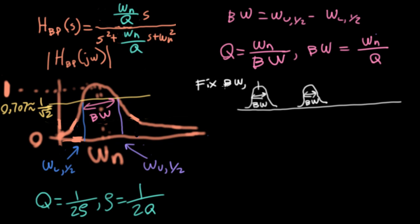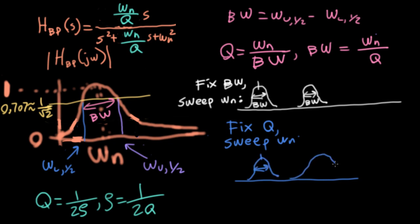Because if you imagine that you fix the bandwidth and you sweep omega N upward, what you'll find is that the listener will perceive this filter as having a smaller quote unquote bandwidth, even though the bandwidth is technically the same. So this is the case if you fix the bandwidth, but you sweep omega N. Now, if you instead fix Q, but sweep omega N, then what happens is you'll start with a bandpass filter with a certain bandwidth at a certain frequency. And then as you sweep it upward, the bandwidth is going to increase.